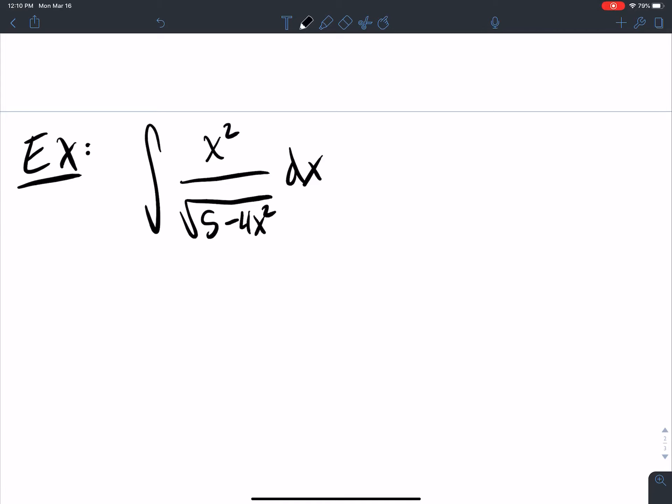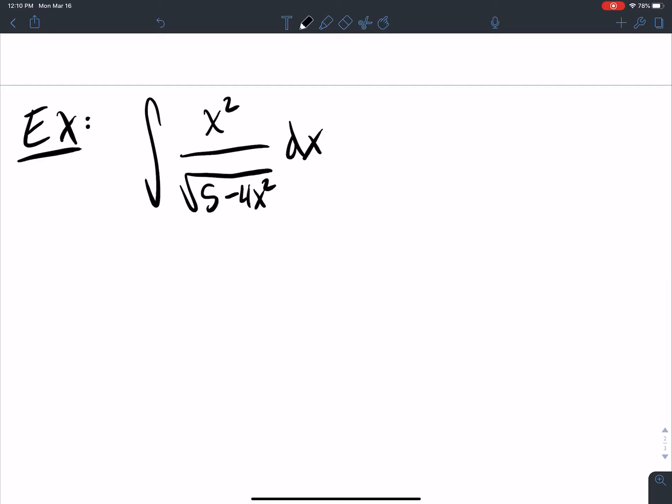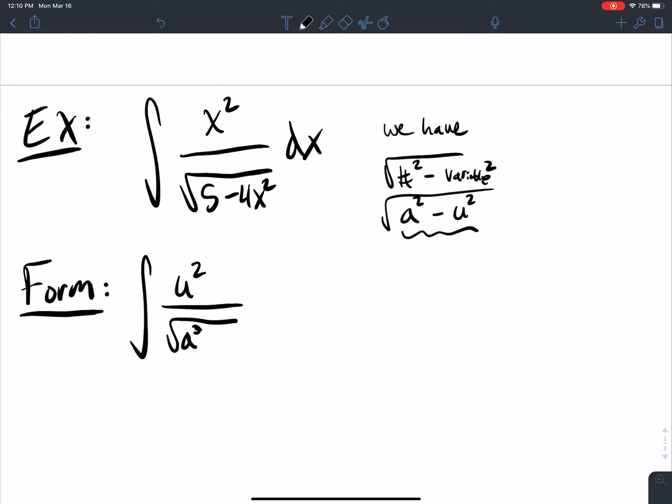So x squared over square root five minus four x squared dx. This would probably be some type of trig substitution since we have a square root, but we're going to use the table. And what do we have? Well, we have a number squared minus a variable squared. So anytime in my formulas I have like an a, that's supposed to be a number, and then a u, that's supposed to be like a variable.